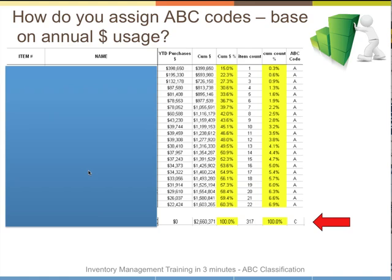Here's an example: a company had 317 items and they're purchasing $2.6 million of these items. The way you assign your codes is you sort them by cumulative value. So here are the items — item 1 at $400,000, item 2 at $195,000, item 3 at $132,000. The top three items represent 27% of their purchases, or $726,000 out of a total of $2.6 million.